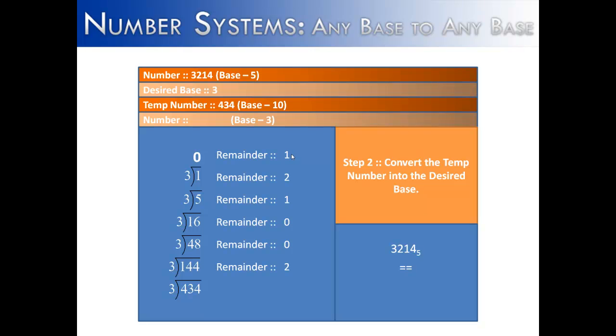We then take all of the remainders and put them together. So 434 in base 10 is 121002 in base 3.